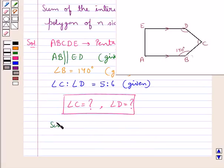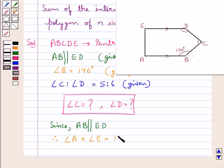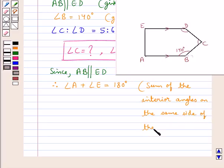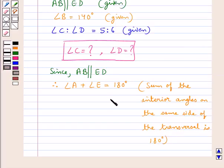Since we are given that AB is parallel to ED, therefore angle A plus angle E is equal to 180 degrees, since the sum of the interior angles on the same side of the transversal is 180 degrees. Let this be result 1.